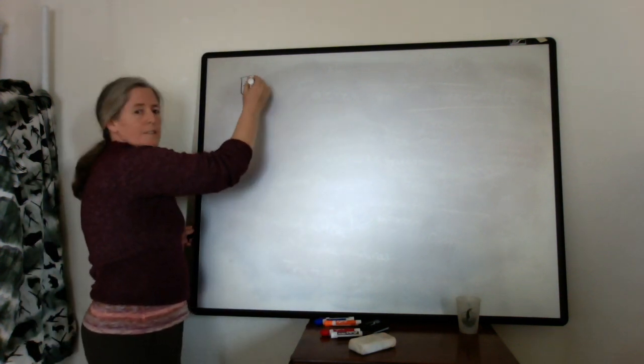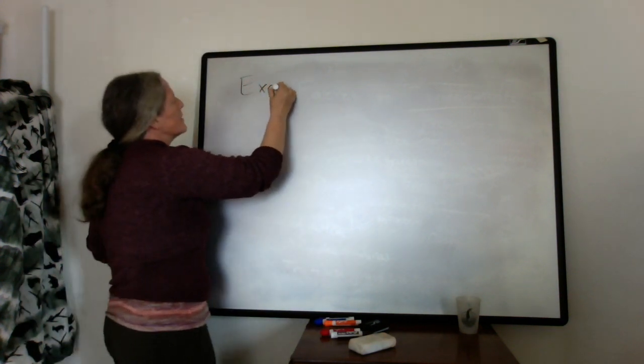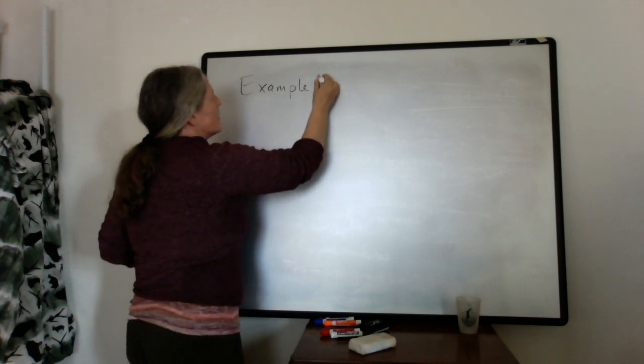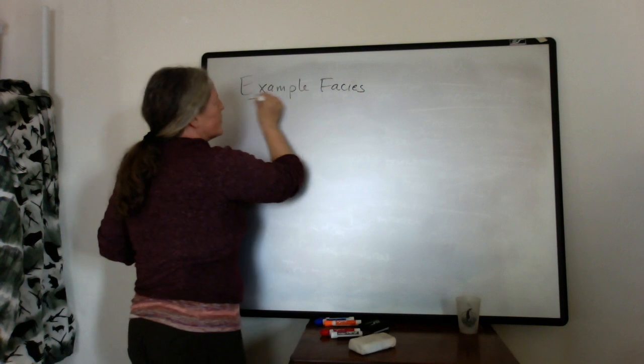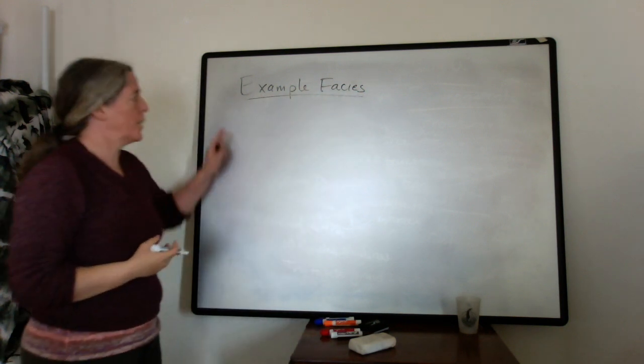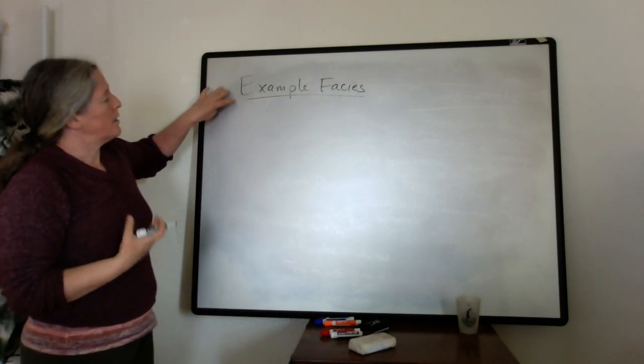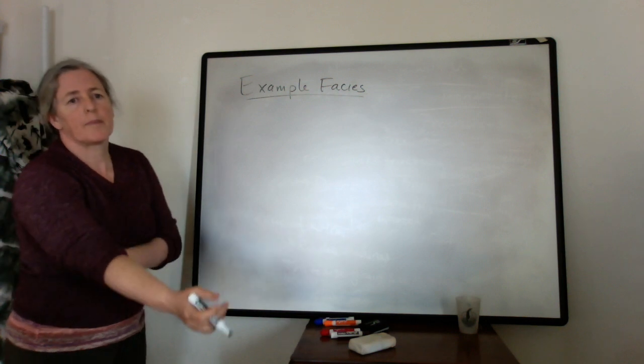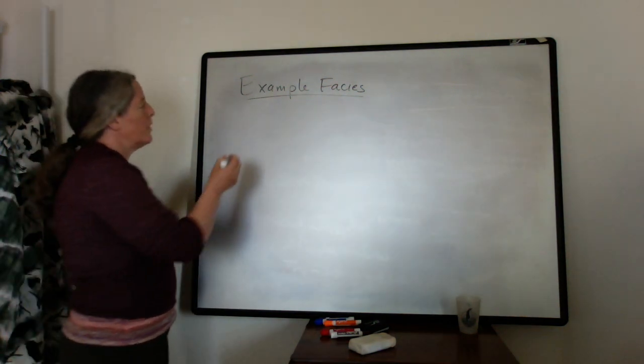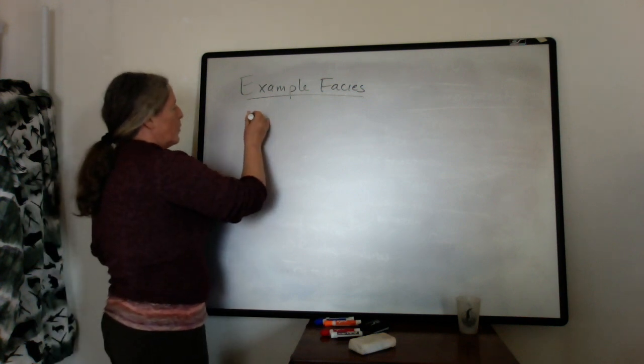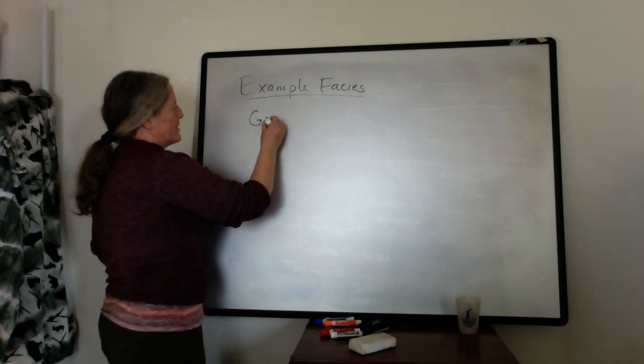Okay, so we're going to cover some example facies and different ways that you can define them. You want to define your facies based on something that's scientifically interesting in your rock. One example would be based on grain size.